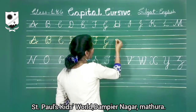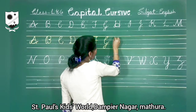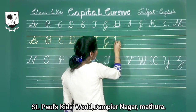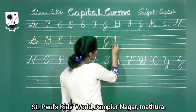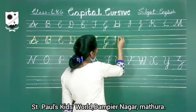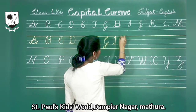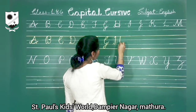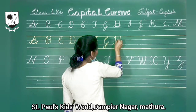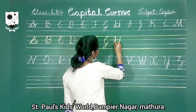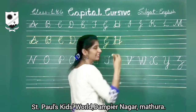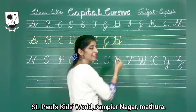Now capital H. Look here. Standing line. Small curve. And then one more straight line. And then one more line and then take a round, like a curve. And leave it. Capital H.